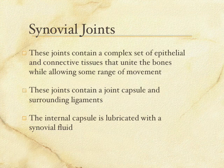These joints are going to have a complex set of tissues. There's going to be a lining tissue and connective tissues. There's going to be a chamber of some kind surrounding the joint — a capsule — and it's going to be lubricated with what we call synovial fluid, related to the fact that these are synovial joints.